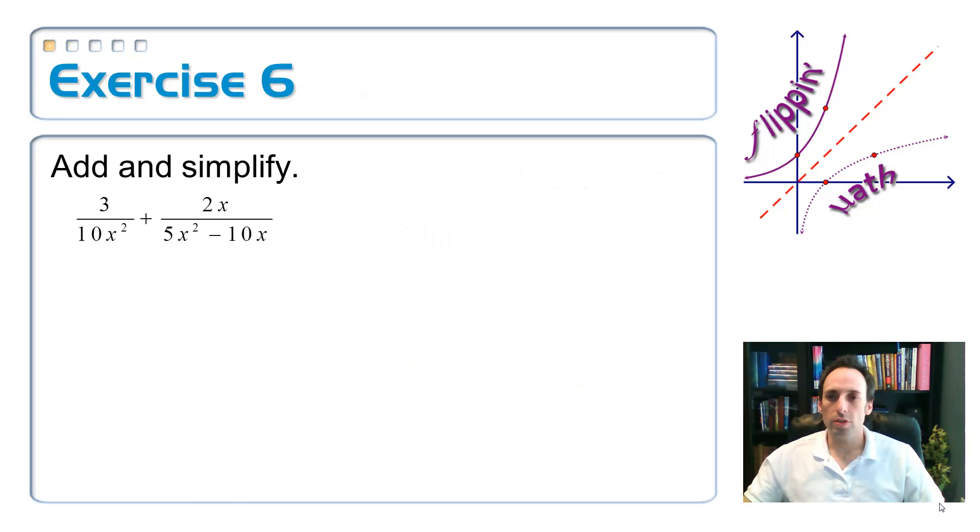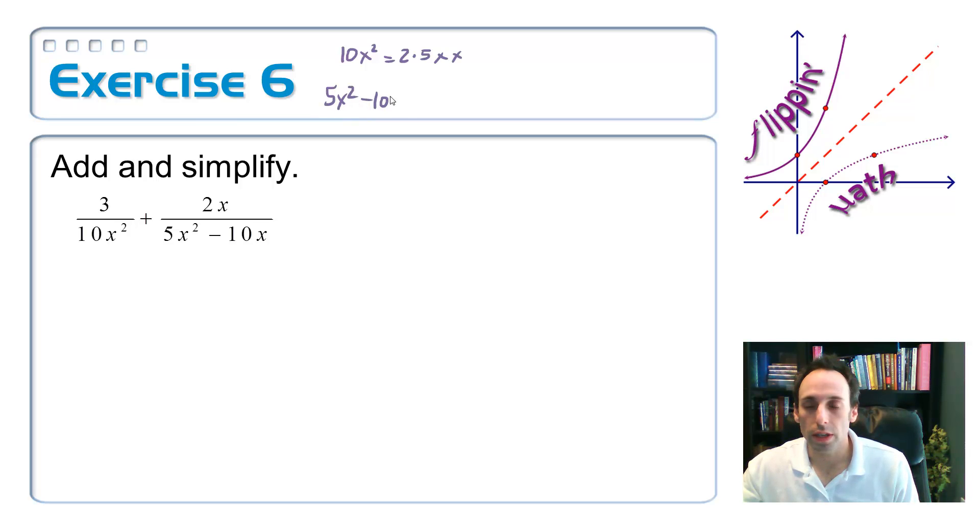Right, okay, so let's try that right here. Step number one, let's factor the denominators. The first one, I have 10x squared. It's pretty much factored. Sure, I could do this as 2 times 5 times x times x if I wanted to. On the second one, I have 5x squared minus 10x. Let's pull out a 5 and an x. So, 5x times x minus 2.